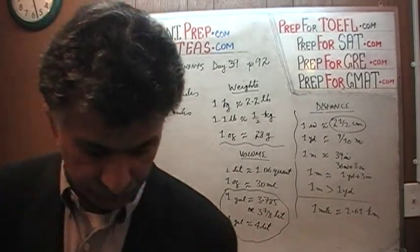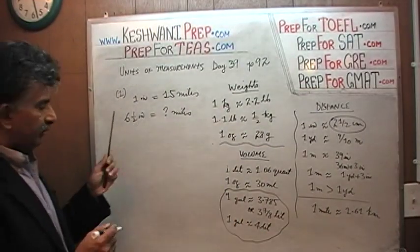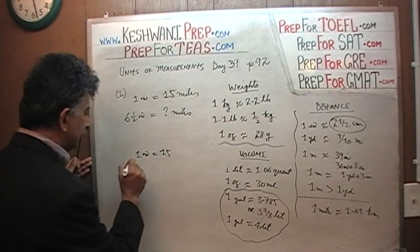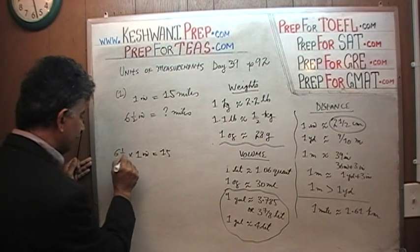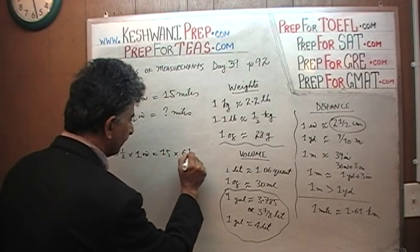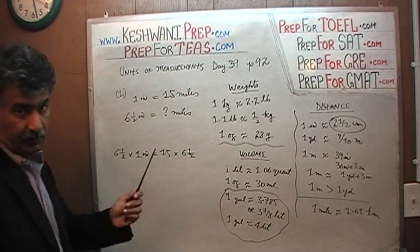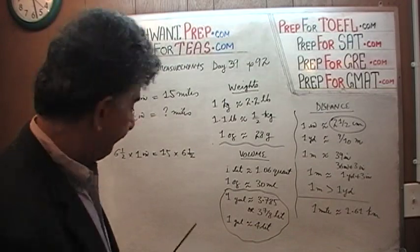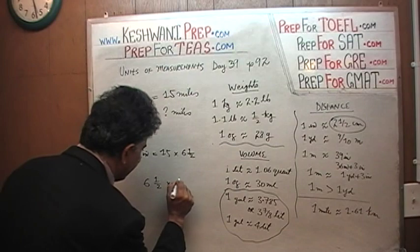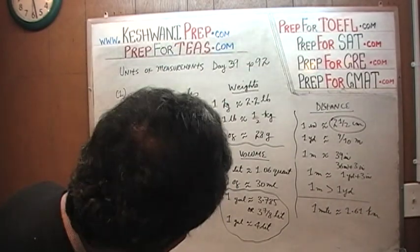Well, 6.5 inches would be 15 times 6.5. That's all. If 1 inch is equal to 15 miles, 6.5 inches would be 6.5 times as much. And how much is 15 times 6.5? Let's find out, shall we? 15 times 6.5, not 12 but 15.